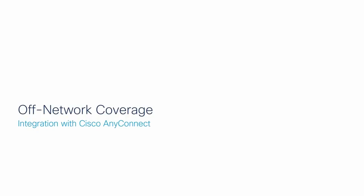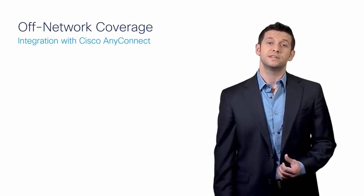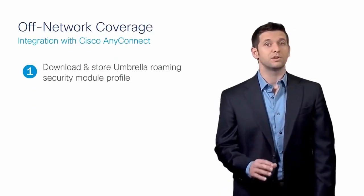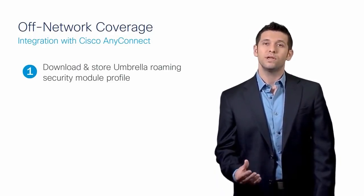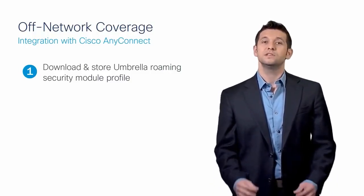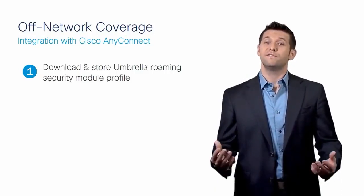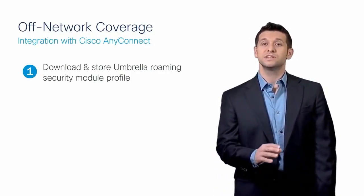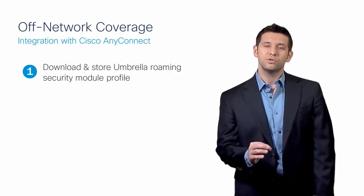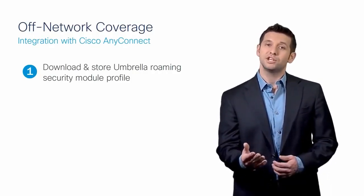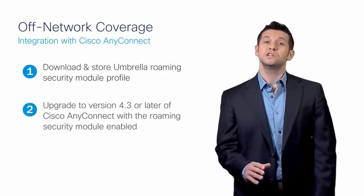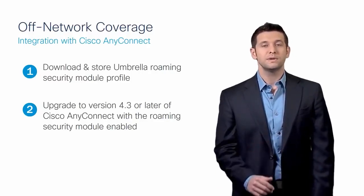Umbrella is now integrated with Cisco AnyConnect. If your customers use Cisco AnyConnect for VPN connectivity, they can enable the Umbrella Roaming Security Module to protect their users even when the VPN is turned off, without adding another endpoint agent. If a customer already has the Umbrella Roaming Client deployed, they need to upgrade to AnyConnect version 4.3 or later with the roaming security module enabled — this will automatically detect, copy registration from, and uninstall the standalone client. If they don't have the roaming client, step one is to download the module from the Umbrella Dashboard, then deploy AnyConnect version 4.3 or later.